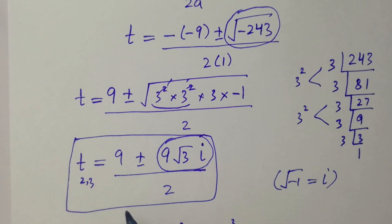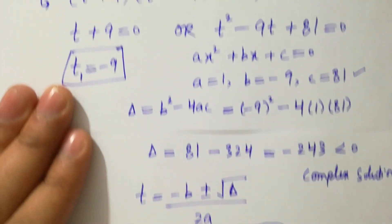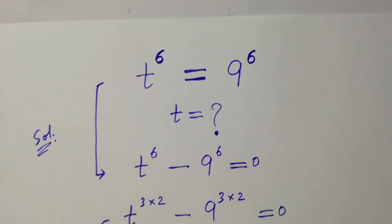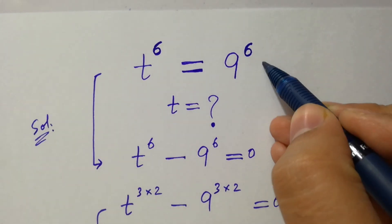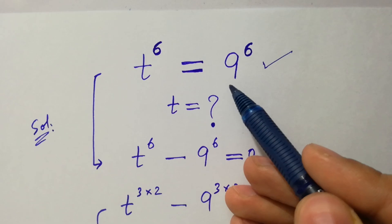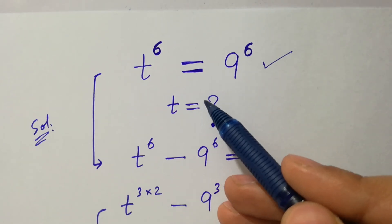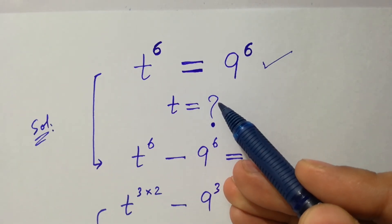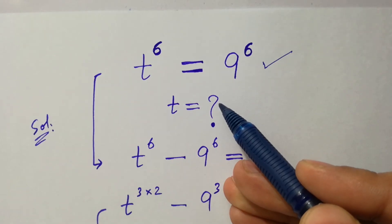So we have 6 solutions in total: t₁ = −9, t₂ and t₃ from Case 1 quadratic, t₄ = 9, and t₅ and t₆ from Case 2 quadratic. It is clear that this is a 6th degree equation, so it must give 6 different solutions. Thanks for watching this video — please subscribe to this channel to get notifications of new videos. Bye.